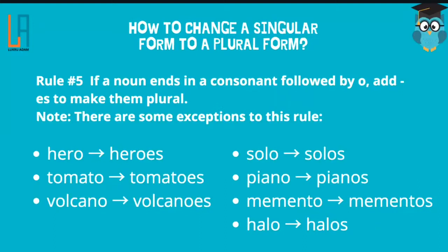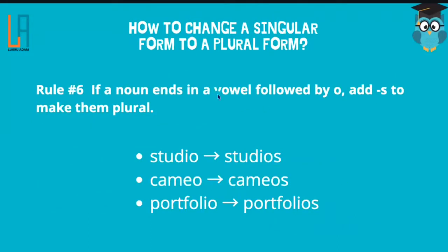Rule number six: if a noun ends in a vowel followed by O, add S to make them plural. Earlier you had to add ES because it was consonant and O; here it is vowel and O. For example, studio — I and O — add S, not ES, giving studios. Cameo — E and O — add S, giving cameos. Portfolio — I and O — add S, giving portfolios.